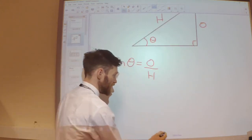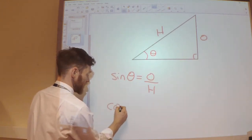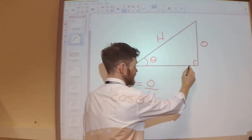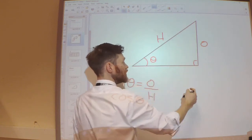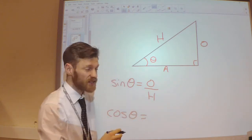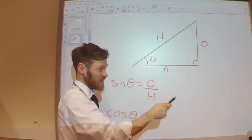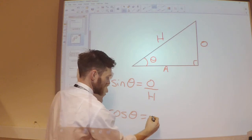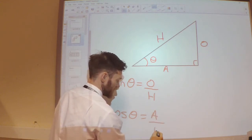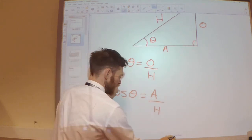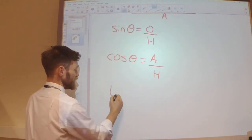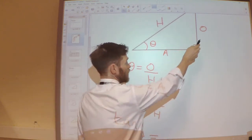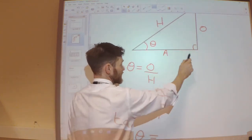Cosine — cos theta — is the ratio of the adjacent and the hypotenuse. The adjacent is the side next to the angle. And then the tan function is defined as the ratio of the opposite and the adjacent.